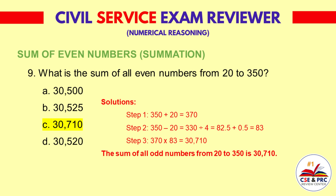Solution — Step 1: 350 plus 20 is equal to 370. Step 2: 350 minus 20 is equal to 330, divided by 4 is equal to 82.5, plus 0.5 is equal to 83.